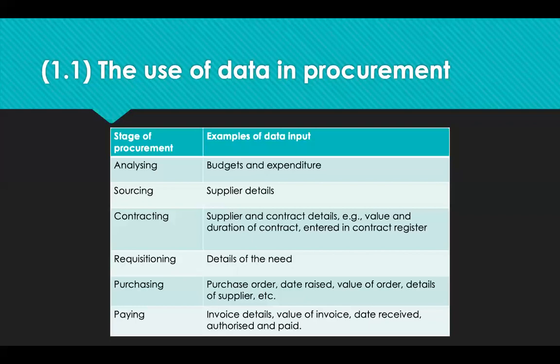For purchasing, we'll need the purchase order, the date it was raised, the value, and the detail of the supplier. When paying, we need invoice details — the value of the invoice, the date it was received, authorised and paid. You can see that now we've captured all of this data, we can do something with it.